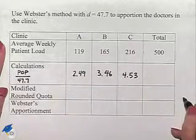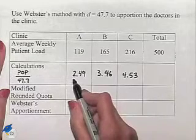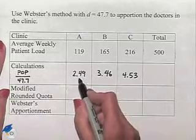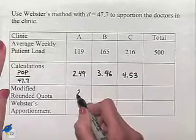Now with Webster's method, we're going to use typical rounding rules. And that is when we see the 2.49, because this decimal portion is not greater than one half, we're going to end up rounding down to 2.